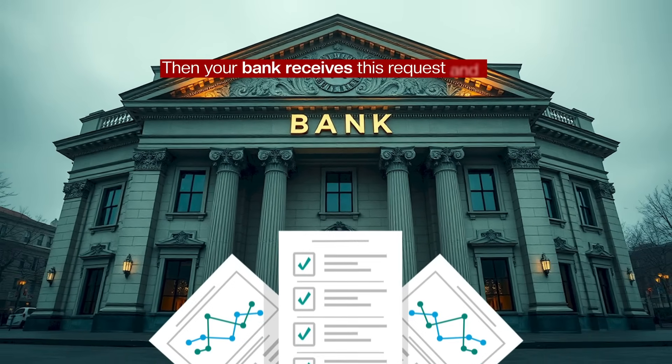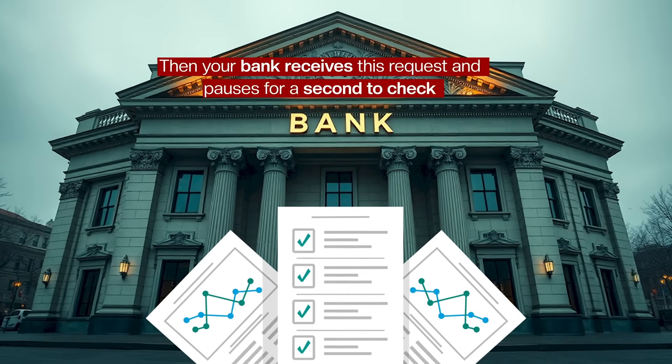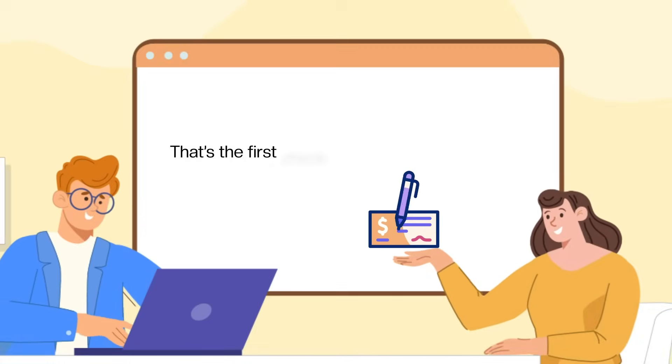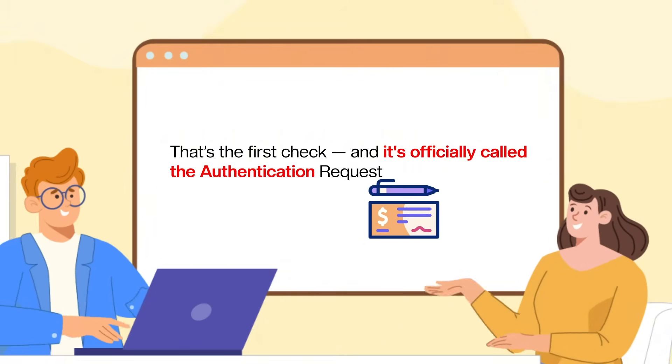Then your bank receives this request and pauses for a second to check. Do I need to challenge this user? That's the first check, and it's officially called the authentication request.